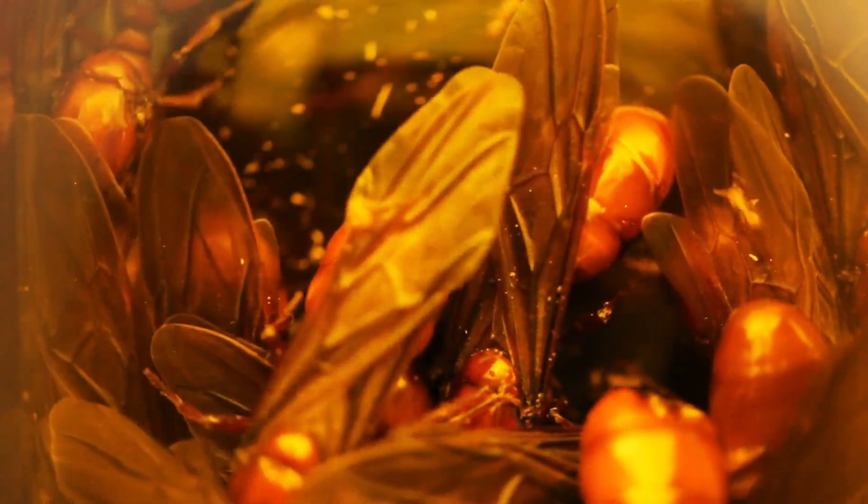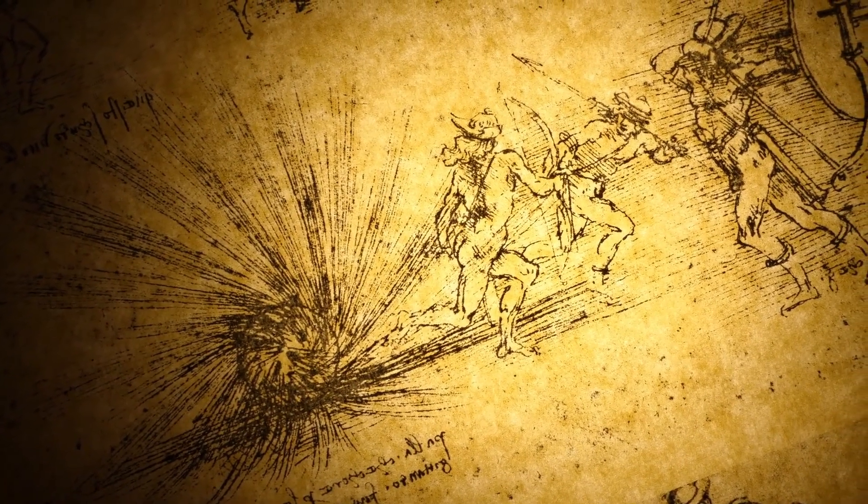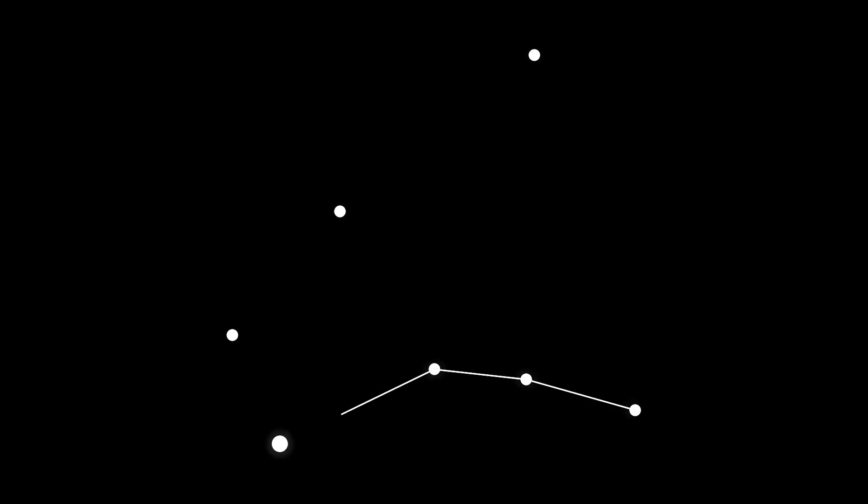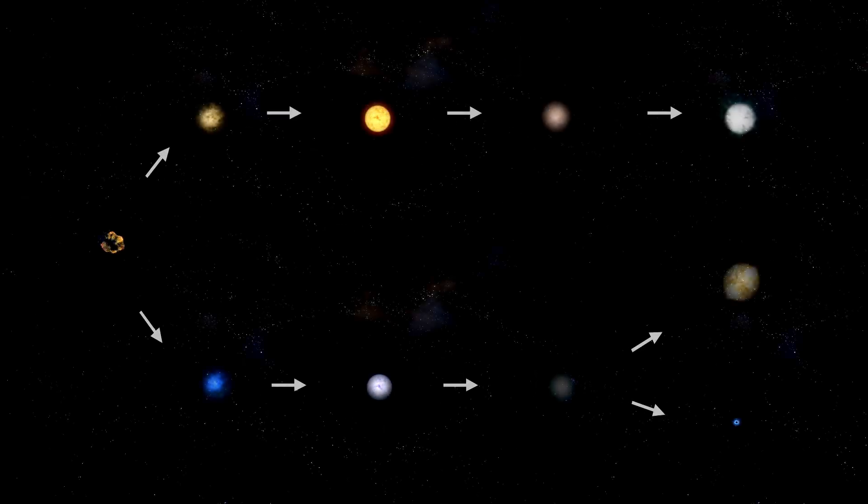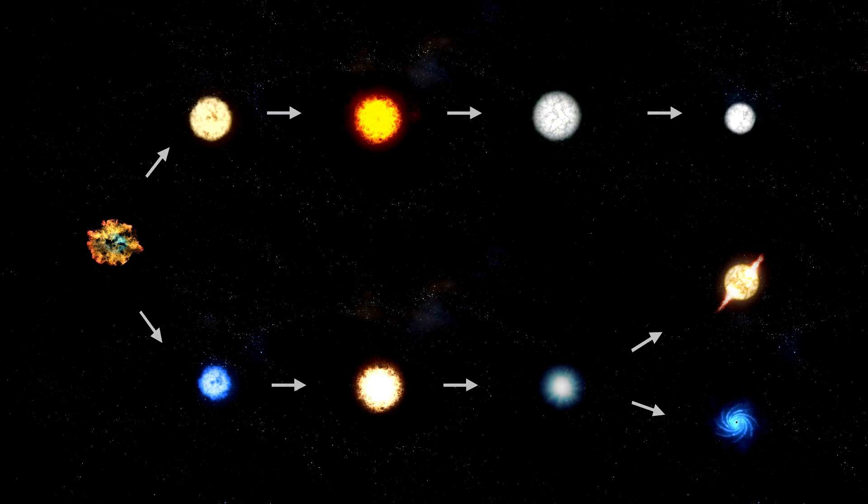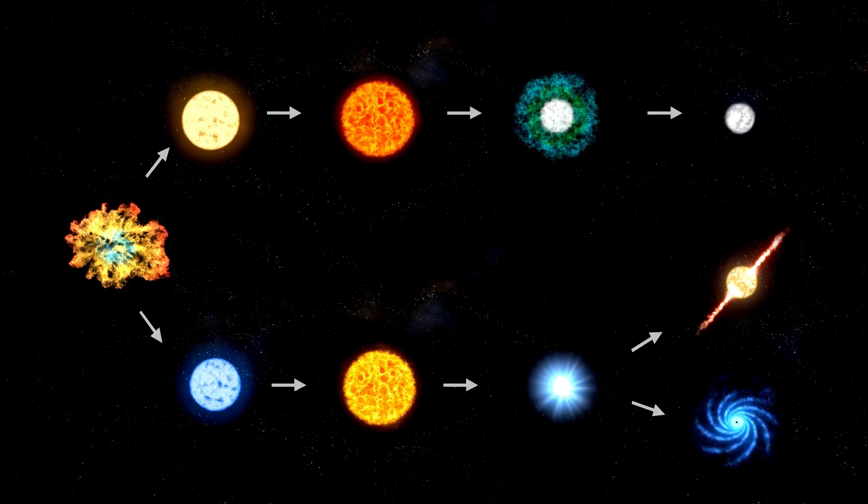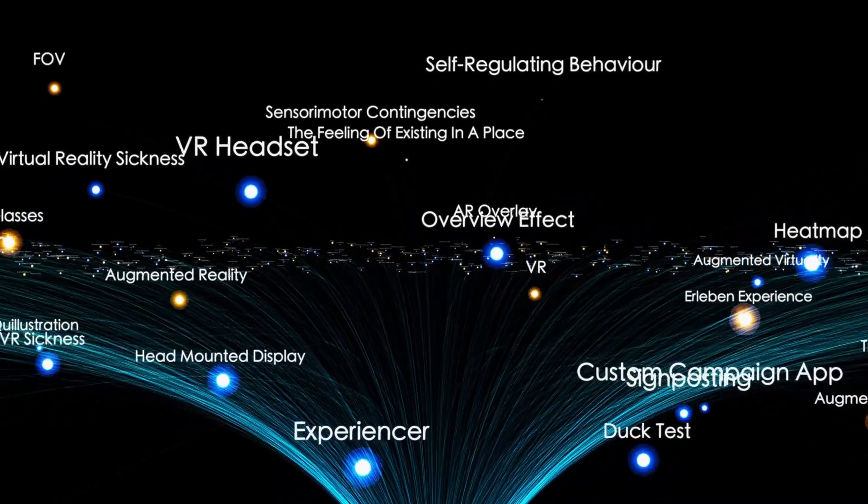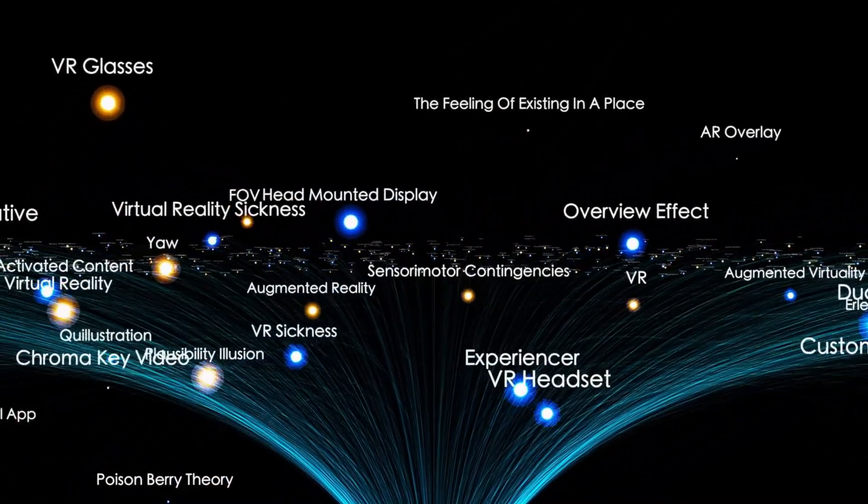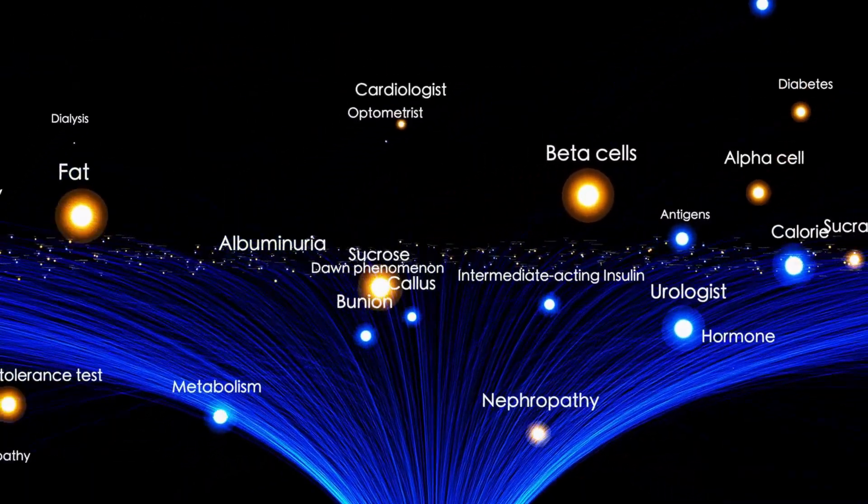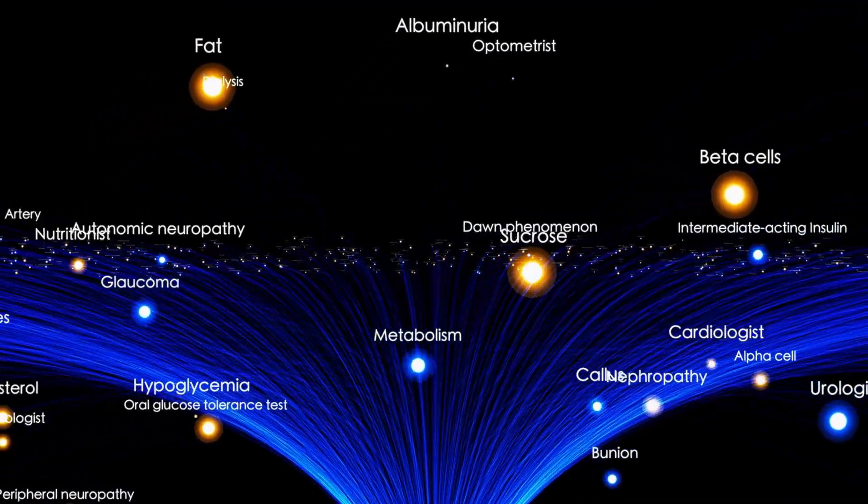The surprising thing is that Betelgeuse is not as unique as one might think. While there are not many stars like it, there are some that share certain similarities and are equally fascinating. One of Betelgeuse's cosmic cousins is Antares, a red supergiant located in the constellation Scorpius. Antares is also a variable star, meaning that it undergoes changes in brightness over time, just like Betelgeuse. In addition, Antares has a mass approximately 12 times that of the sun and a radius that is 700 times that of the sun. So, it's safe to say that Antares is no slouch in terms of size.